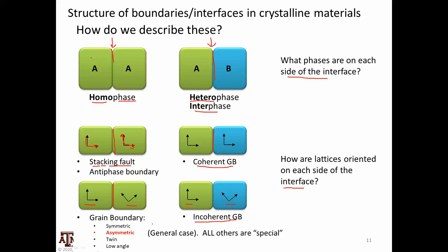For a homophase boundary — say polycrystalline iron — I generally have a different orientation on one side versus the other side of the boundary. Within that case, I could have symmetric boundaries, where both are rotated by the same amount in opposite directions; asymmetric boundaries, where one is rotated more than the other; or very special things like twin grain boundaries or low angle grain boundaries. These are all examples of grain boundaries — interfaces between two of the same phase.